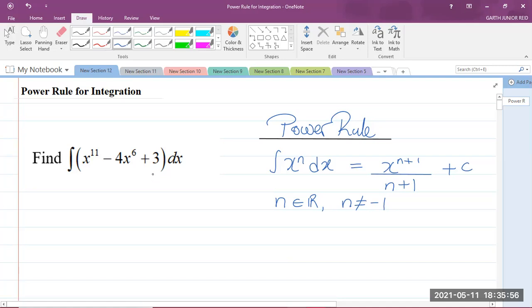Just to remind you what the power rule says, I have it here to my right. If I am integrating x to the power of n with respect to x, then that is equal to x to the power of n plus 1 divided by the same power n plus 1 plus an arbitrary constant of integration c. And n is a real number, but you cannot plug in negative 1 for n. When n equals negative 1, this formula will not work.